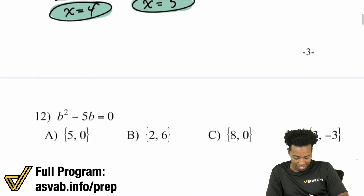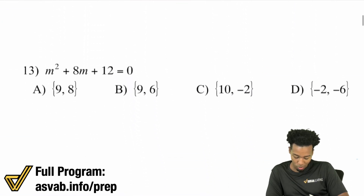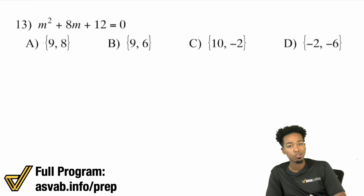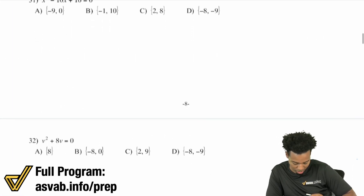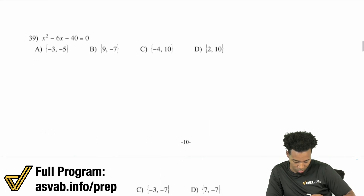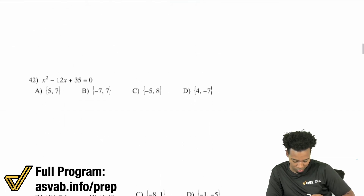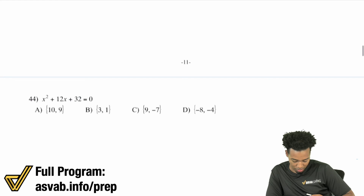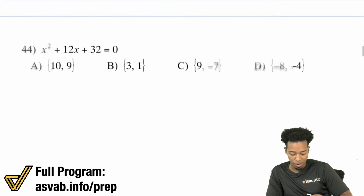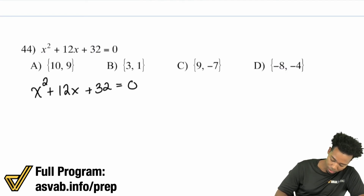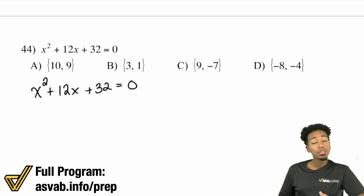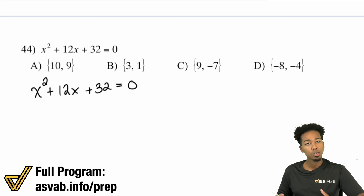We're about 15 minutes in. Let's try one more: m squared plus 8m plus 12 equals 0. Actually, let's do number 44 and wrap it up: x squared plus 12x plus 32 equals 0. We already have zero on the right side by itself, so we're good. Now we just factor, apply the zero product property, and solve.